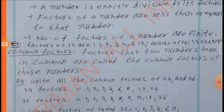Example: Factors of 12 are 1, 2, 3, 4, 6, 12. Factors of 24 are 1, 2, 3, 4, 6, 8, 12, 24.